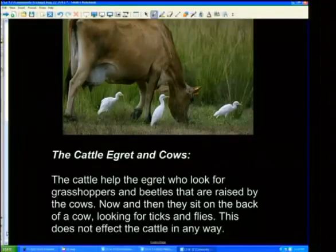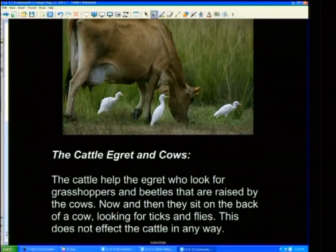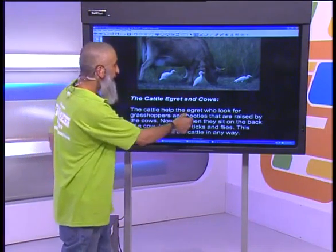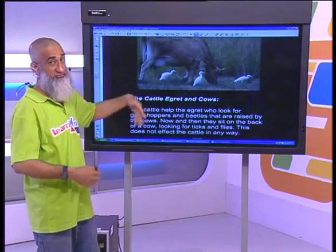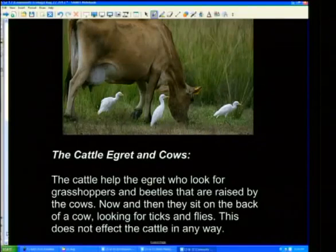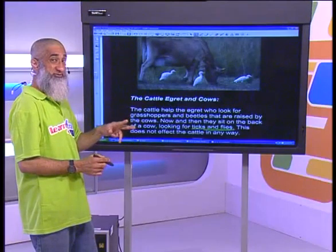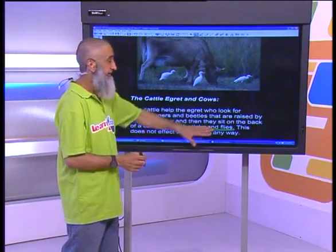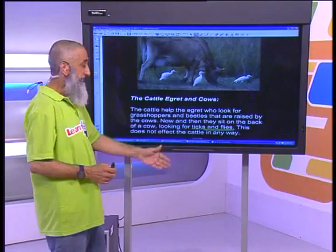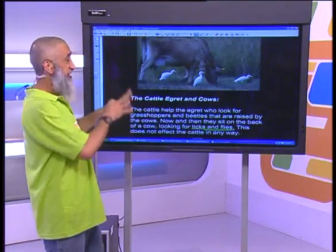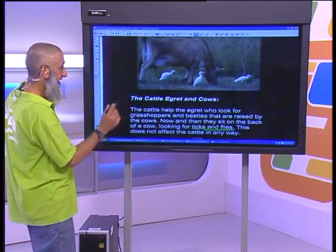So the cattle egret and the cows: the cattle help the egret look for grasshoppers and beetles that are raised by the cows' movement. The grasshoppers start moving as the cow moves, and the egrets pick them up and eat them. Now and then they also get a free ride on the cow — a taxi — looking for ticks and flies. If they are not eating the ticks and flies, up to that point it's commensalistic. But if they move on and take away the ticks and flies from the cow, then it becomes mutualistic. A relationship can change within one example.